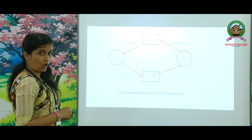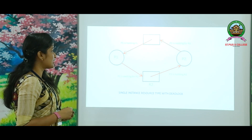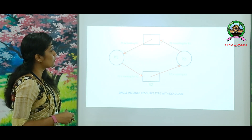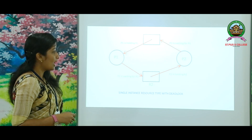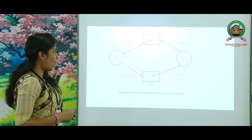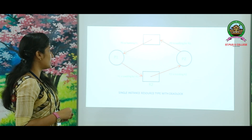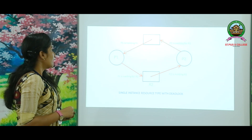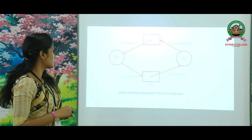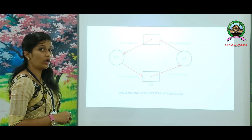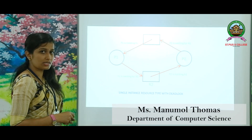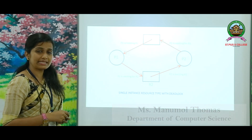In this case, the process P1 is requesting for a resource called R2, but R2 is already held by the process P2. At the same time, the process P2 is requesting for another resource called R1, but R1 is already being held by the process P1. The edge from P1 to R2 is called a requesting edge, and since R2 is already assigned to P2, that edge is called an assignment edge.